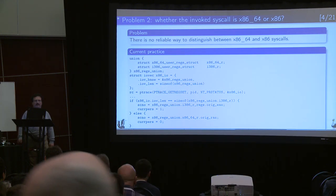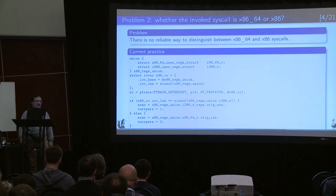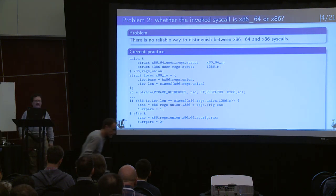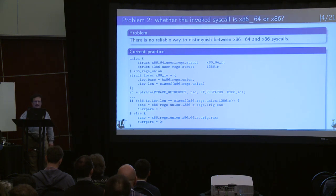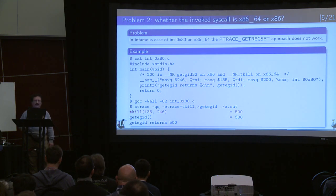Another problem, similar to the first one, is that on the most popular platform, x86-64, there is a compat mode, and there is no reliable way to distinguish native syscalls from compat syscalls. In most cases it works. What debuggers usually do is they use PTRACE_GETREGSET with a union of two register sets, and the kernel usually responds not just with a register structure but also returns the size. By the size, you can tell whether it was a native or a compat register set. But it doesn't work in all cases - for example, in the infamous case of interrupt number 0x80, this approach doesn't work.